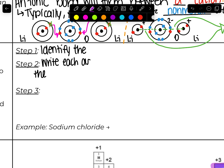Our example is sodium chloride. Step one: identify the cation and the anion. This step orients you — what do you have present in this formula? Sodium is going to be our cation; this is the metal. Chlorine is going to be the anion; this comes from the non-metal.